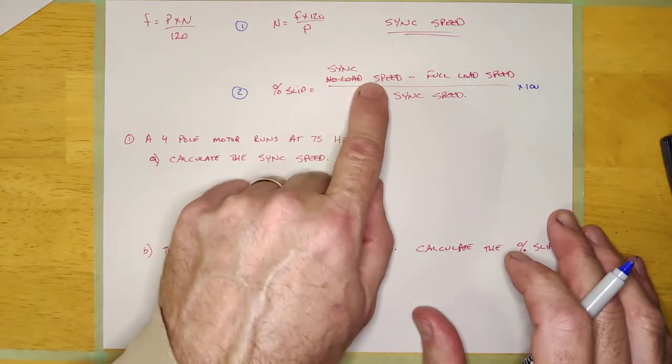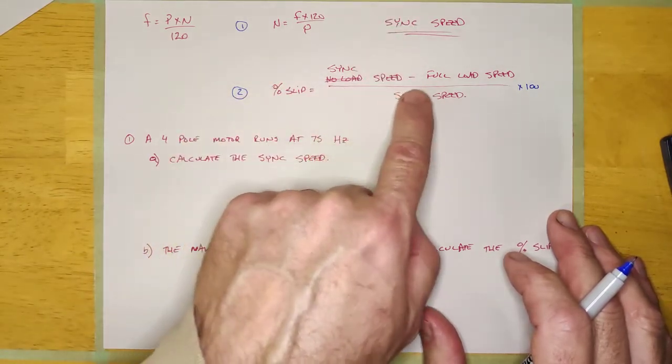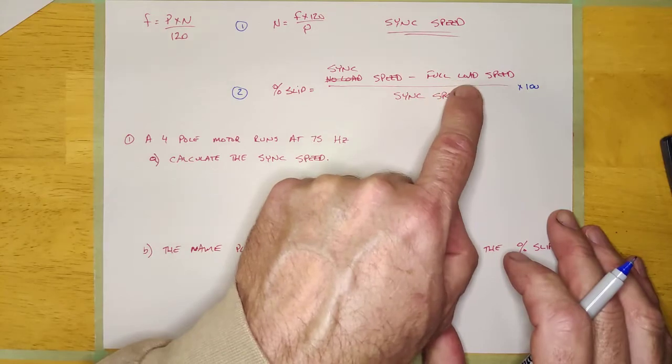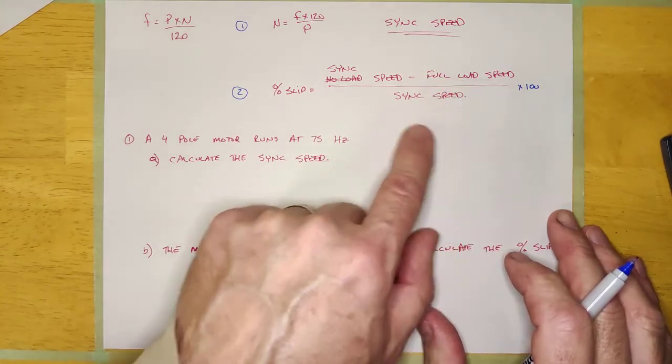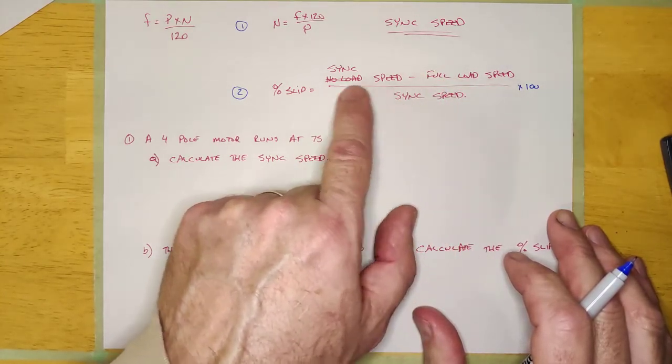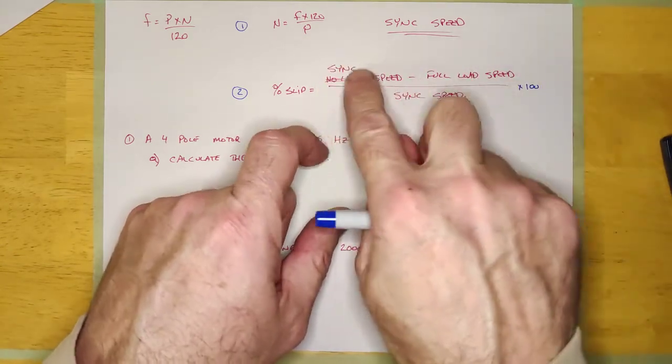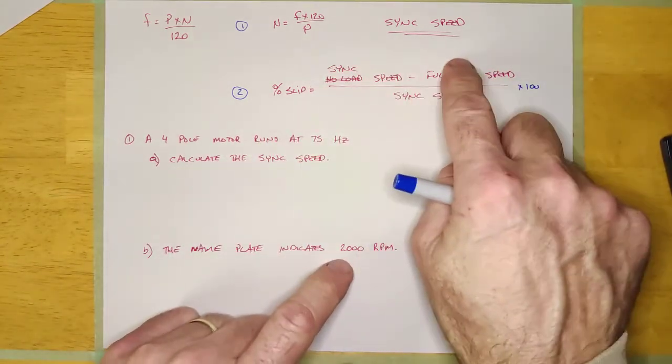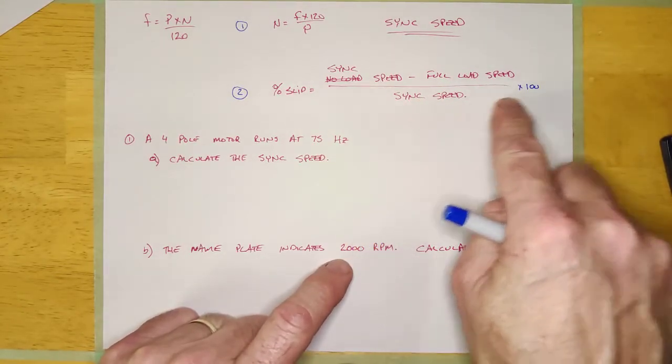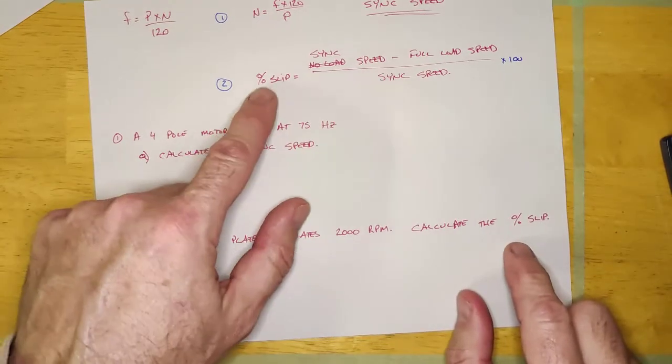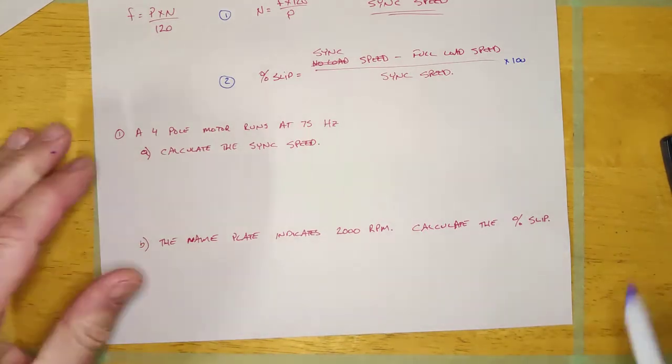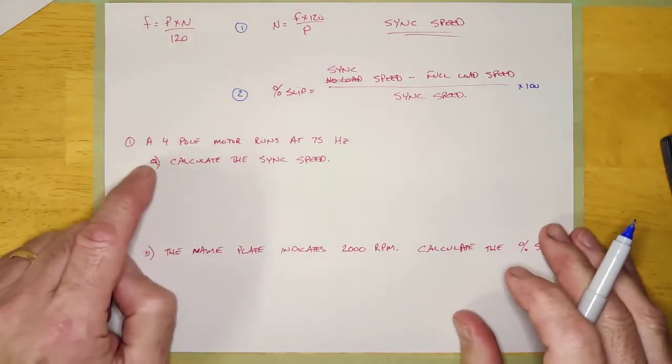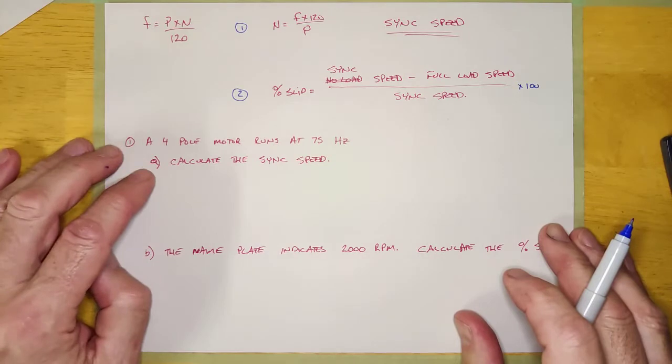And it is the sync speed, which we can calculate, minus the actual speed, full load speed, or the nameplate speed. All over the sync speed. And so basically what this top is is the sync speed minus the full load speed. So it's the amount it's slipping divided by the sync speed. And then times 100 to get it into a percentage. And so as an example, we're just going to take up this question here.